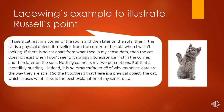Here is Lacewing's summary of Russell's point about cats. If I see a cat first in the corner of the room and then later on the sofa, then if the cat is a physical object, it travelled from the corner to the sofa when I wasn't looking. If there is no cat apart from what I see in my sense data, then the cat does not exist when I don't see it — it springs into existence first in the corner and then later on the sofa, with nothing connecting my two perceptions. But that's incredibly puzzling — it is no explanation at all of why my sense data are the way they are. So the hypothesis that there is a physical object, the cat, which causes what I see, is the best explanation of my sense data. I want you to look at this example in more detail, which I've put instructions for on the system.